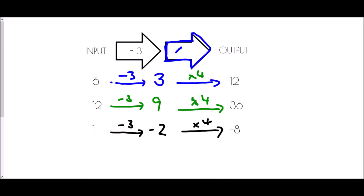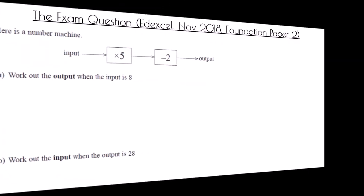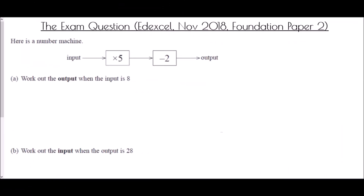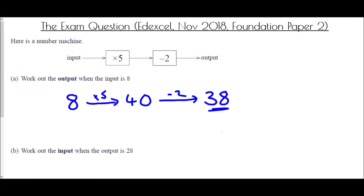The missing function is times four. Now for the exam question from the Edexcel November 2018 Foundation Paper Two. It shows a number machine — another word for a function machine — where the process is multiply by five then subtract two. In the first part, the input is eight: eight times five is 40, then 40 take away two is 38, so the output is 38.